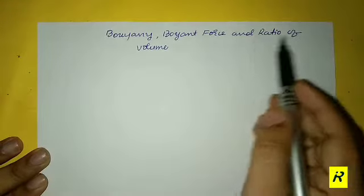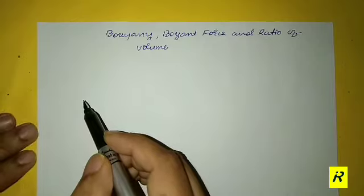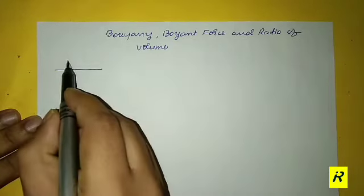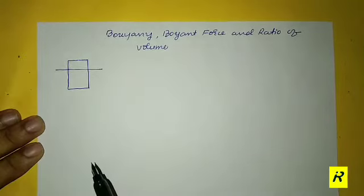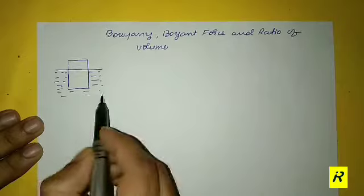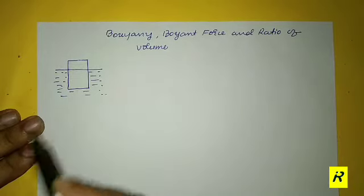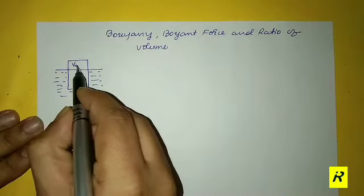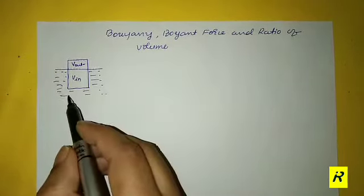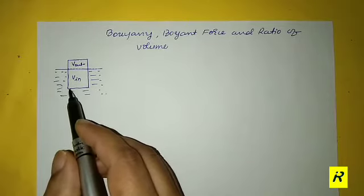Suppose we assume an object is submerged inside some liquid. This portion is the liquid portion and this is the outside appearance. This is the volume of the object appearing outside, and this is the volume of the object submerged inside. In the equilibrium situation, the body never moves up or down — it is freely suspended in the liquid.